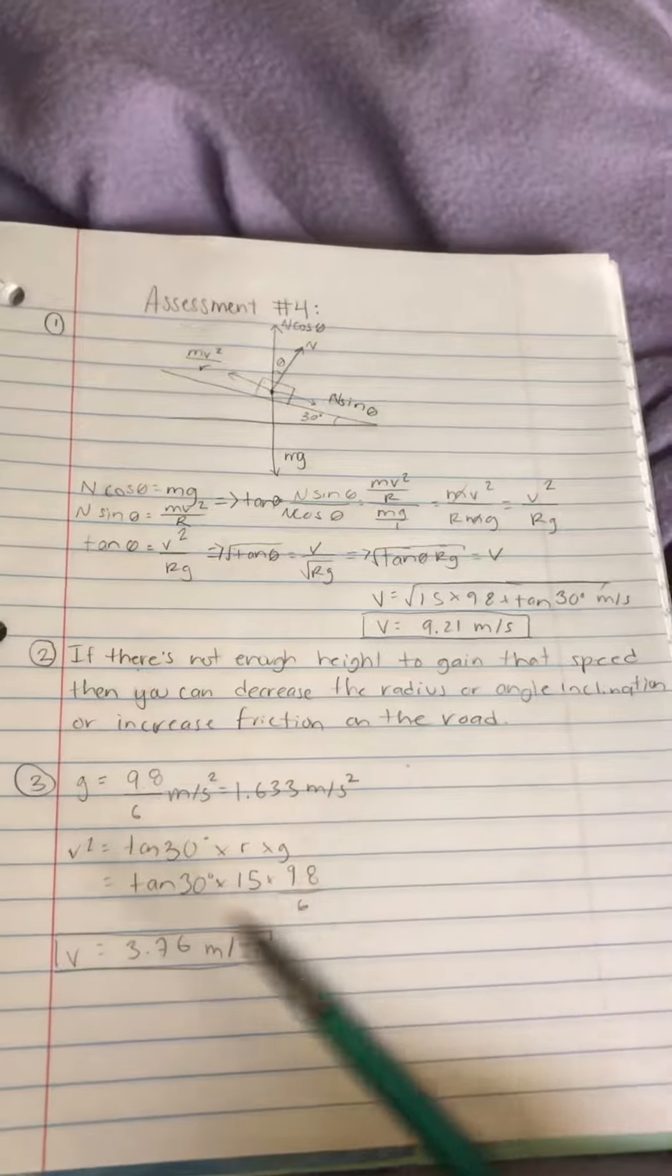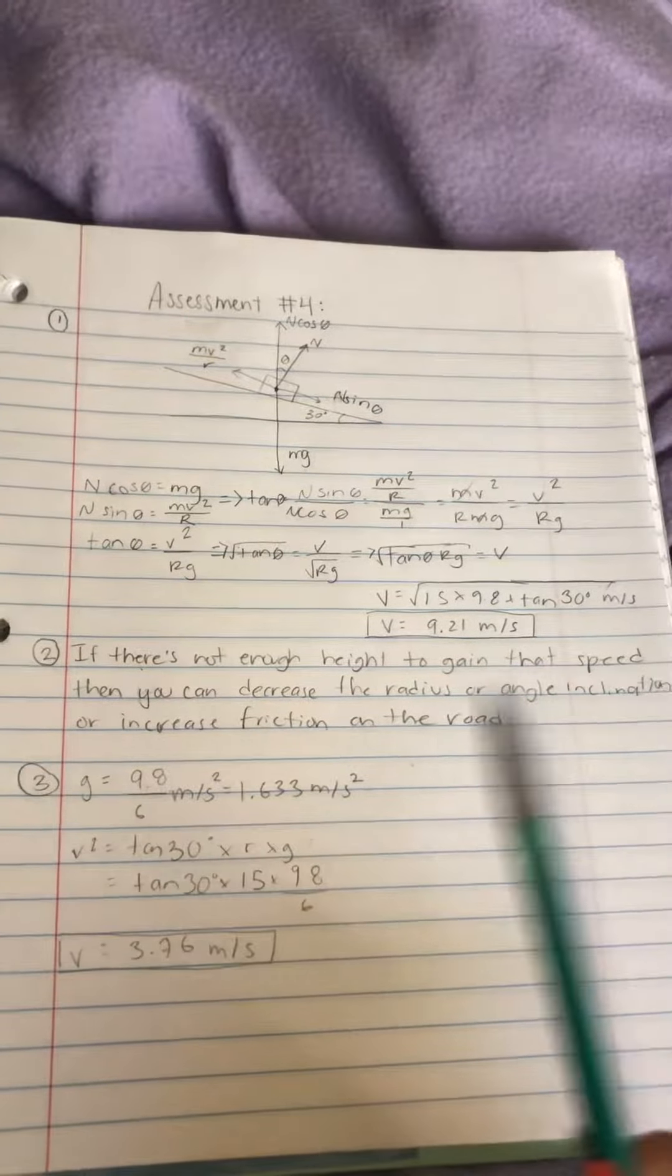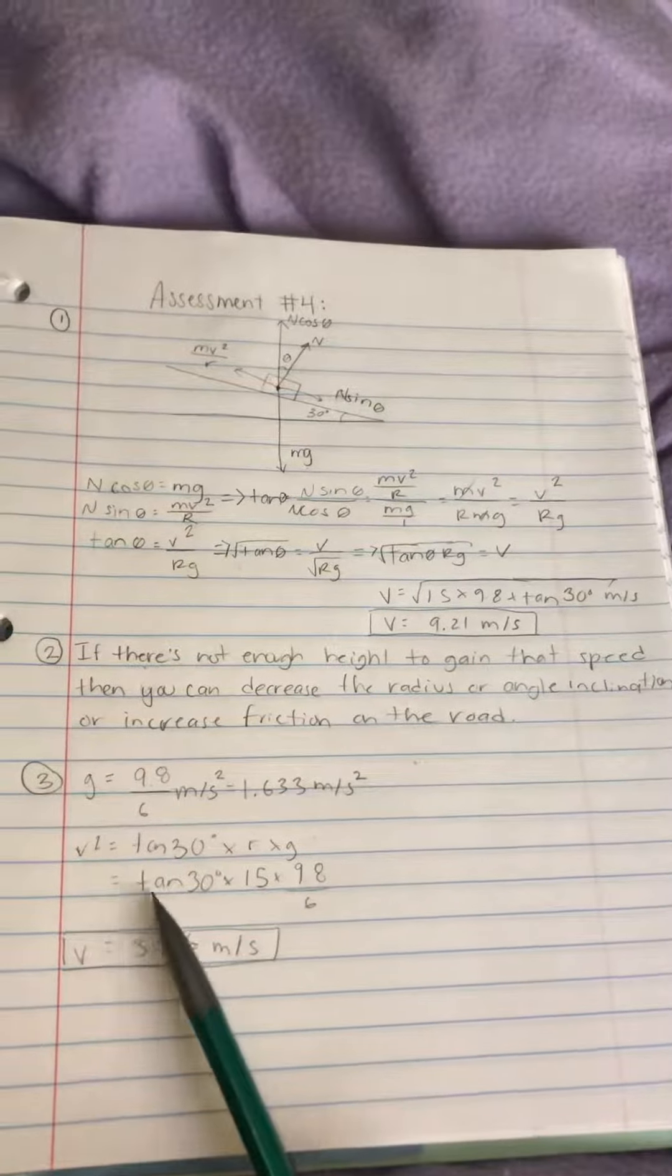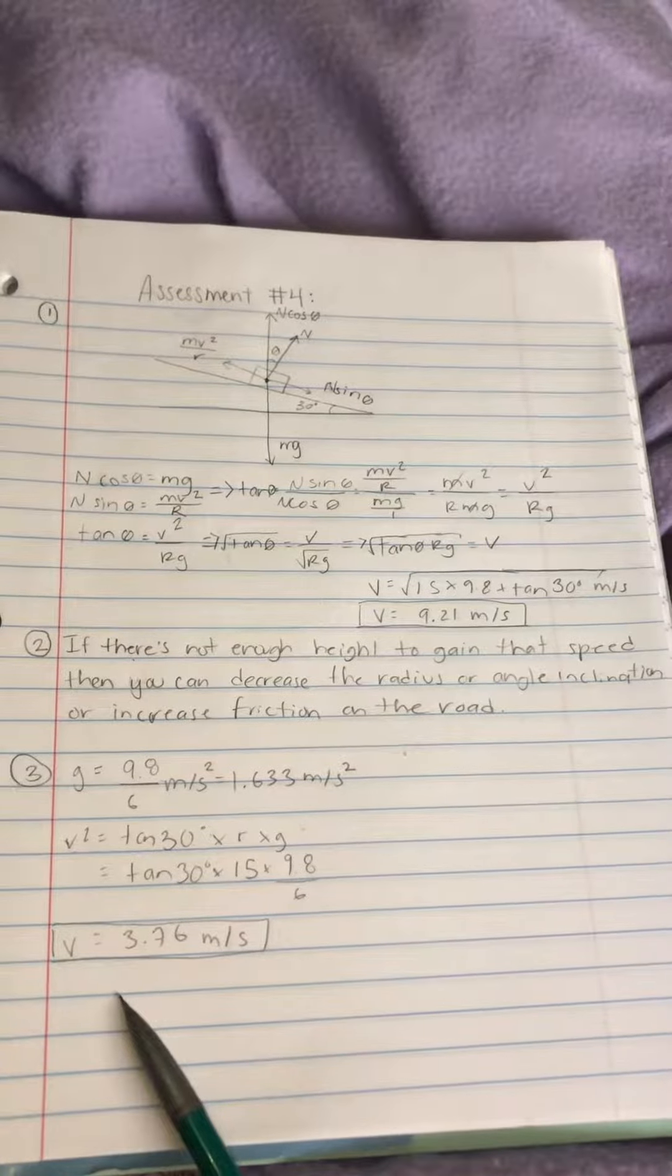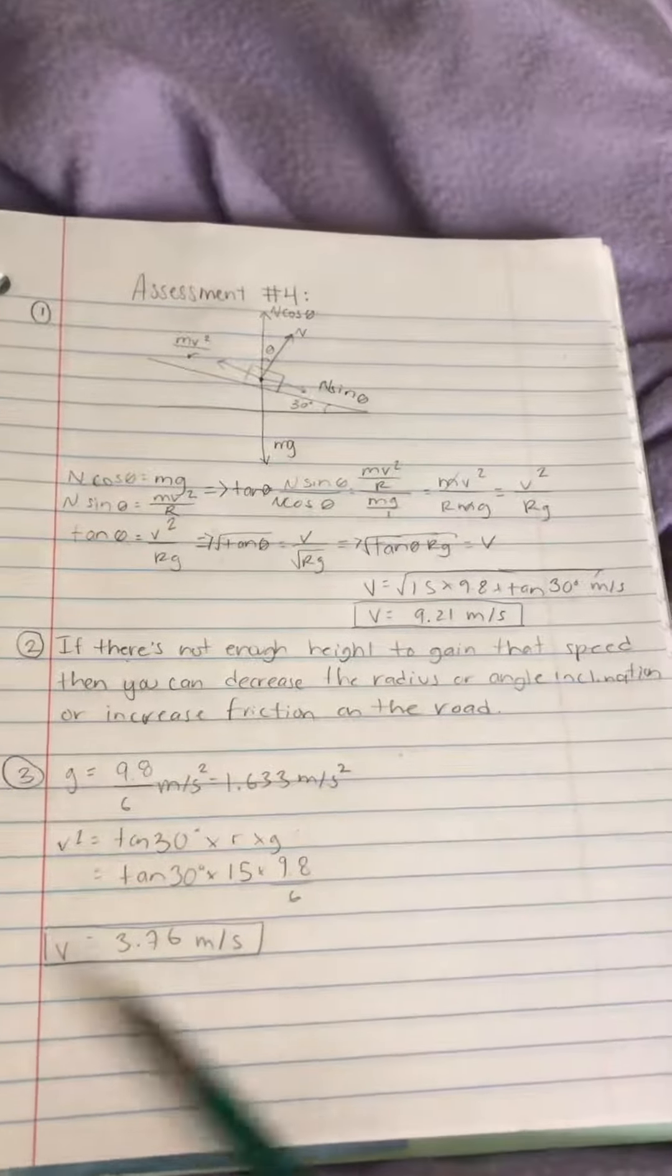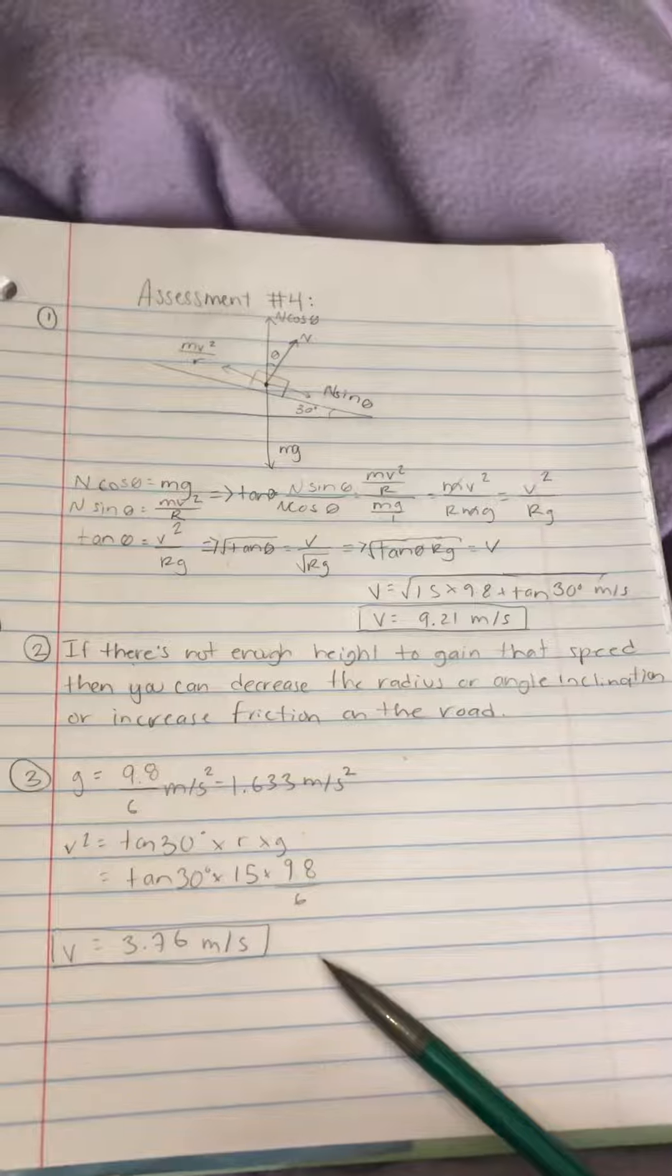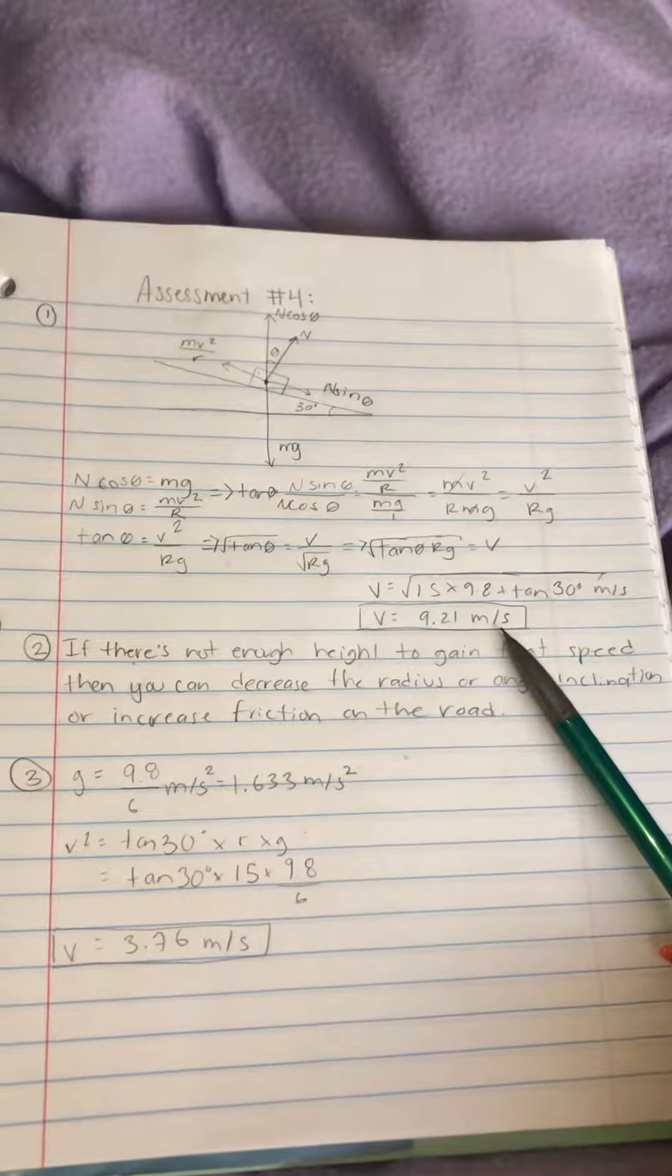And the formula is the same, v² equals tangent 30 times the radius times gravity. You plug in, and then the velocity that you need if you were on the moon would be 3.76 meters per second, which is less than what you need on Earth.